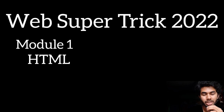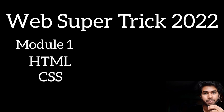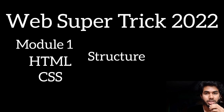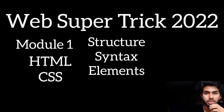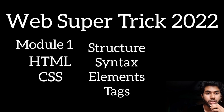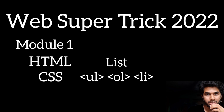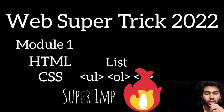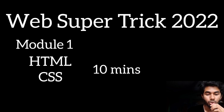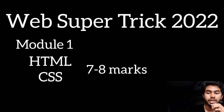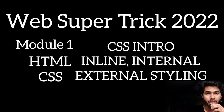In Module 1, there are two topics: basic introduction to HTML and CSS. For HTML, focus on the structure of the document, syntax, and various elements. Along with that, study lists — the li, ol, and ul tags. Each of those takes about 10 minutes, so the whole HTML part takes around 30 minutes and can fetch you seven to eight marks.